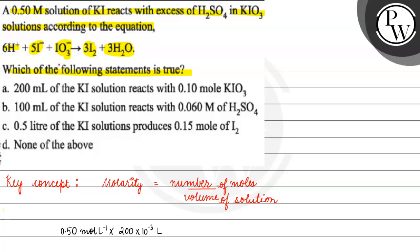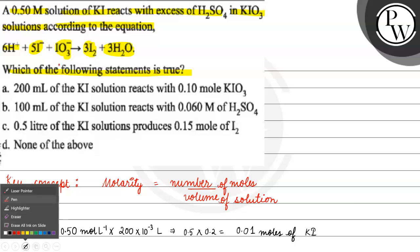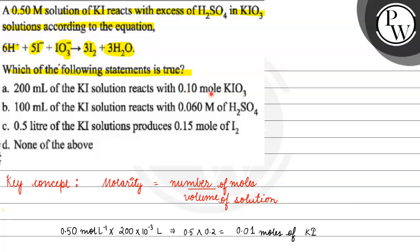We have 1 liter in 1000 ml, so in 1 ml we have 10⁻³ liters. For 200 ml, we have 200 × 10⁻³ liters. Therefore, the number of moles of KI comes out to 0.01 moles of KI.